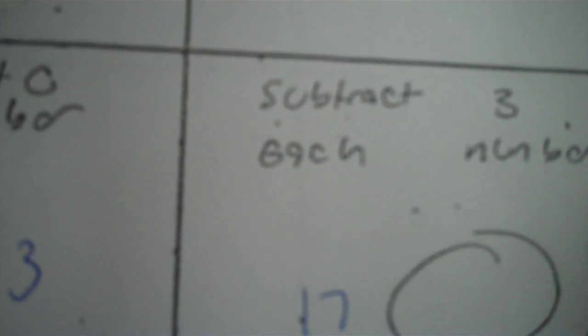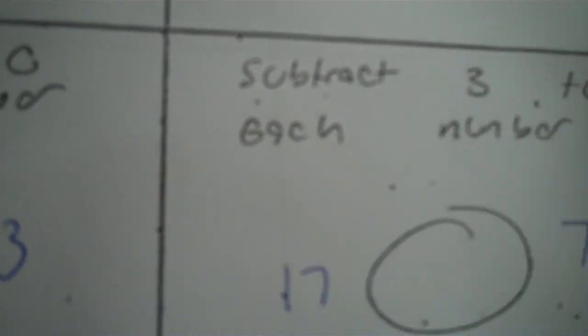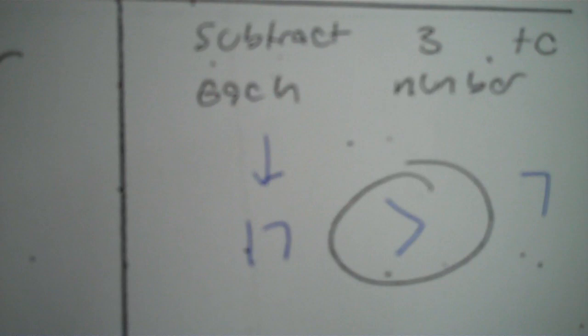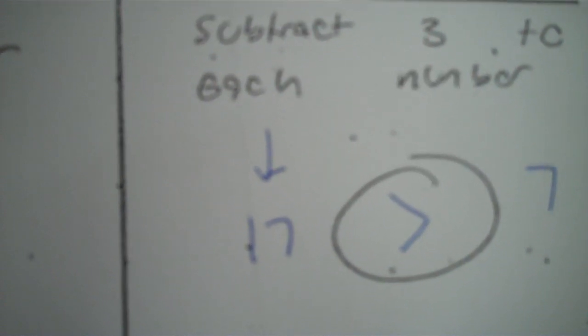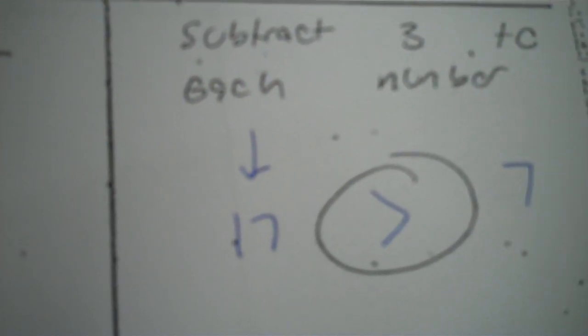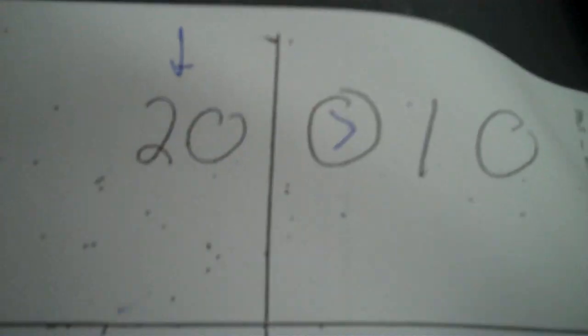Now go back to 20 and 10 and subtract 3 from each number. That gives 17 and 7. Since 17 is the bigger number, we open the sign so it eats the bigger number: 17 greater than 7. The sign did not change. So when you add or subtract, the sign stays the same.